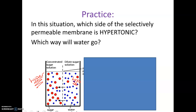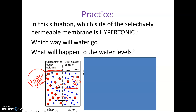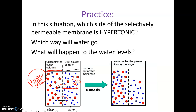Remember, water is the solvent. Second question: if the sugar cannot pass and only water can pass, which way will the water go? The water is going to go to the left — it's going to go to the hypertonic side, which is the side with less water. More sugar means less water, so the water goes that way. The water level would go up on the left side and down on the other side, because more water molecules are moving towards the hypertonic side.